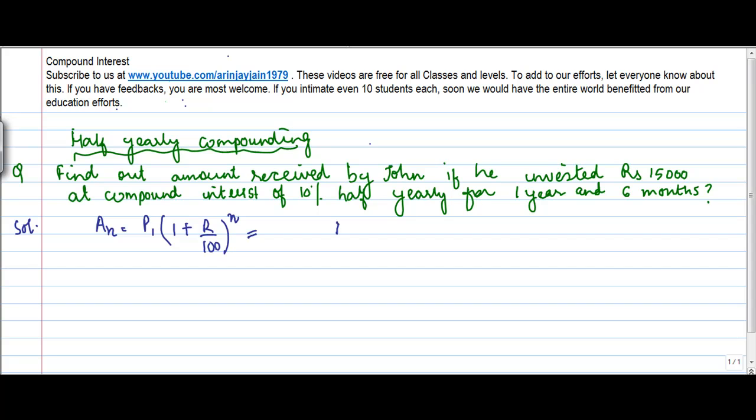The principle we know is 15,000, r is equal to 10%, and n is equal to one year six months, and the compounding has to be done half yearly.